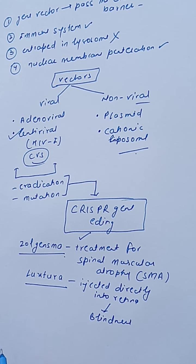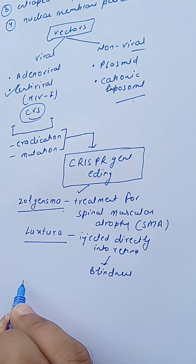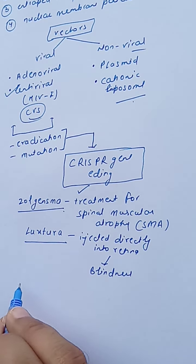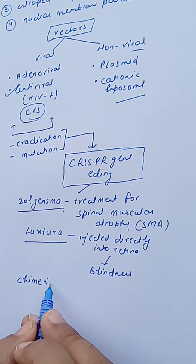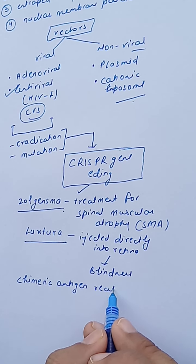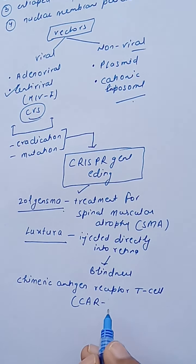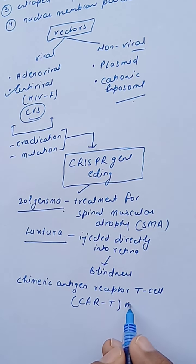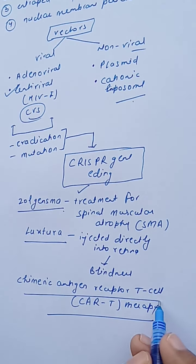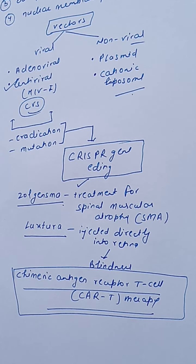Another topic covered in immunopharmacology is cell-based therapy. A well-known example is chimeric antigen receptor T-cell therapy, known as CAR-T therapy. This was discussed in detail in the immunopharmacology unit, covering how it works and its challenges. That concludes this overview of gene and cell-based therapies for CVS disorders.